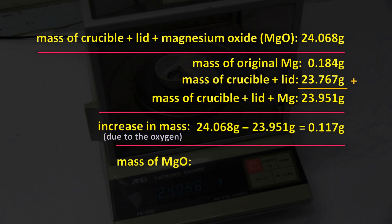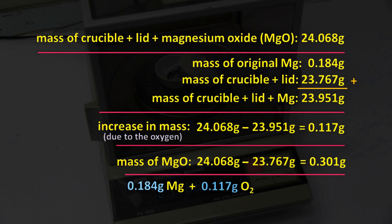The mass of the MgO must be equal to our final mass, 24.068 grams, minus the mass of the crucible and its lid, which was 23.767 grams. This equals 0.301 grams. So, 0.184 grams of magnesium combined with 0.117 grams of oxygen to produce 0.301 grams of magnesium oxide.